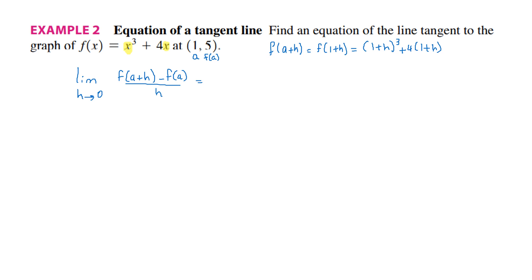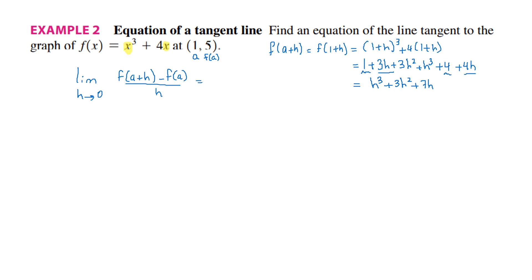I will get 1 plus h cubed plus 4 times 1 plus h. Before substituting, I'm going to expand first. I get 1 cubed plus 3h plus 3h squared plus h cubed, and then distributive property for 4: 4 times 1 is 4, and 4 times h is 4h. Combining like terms, I get h cubed plus 3h squared. I have 3h and 4h, so a total of 7h, and 1 plus 4 which equals 5.